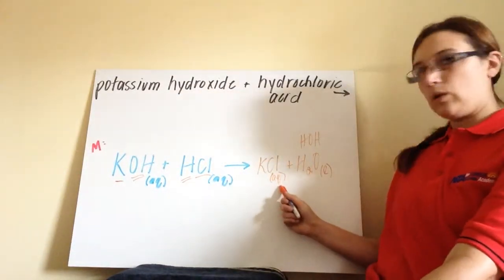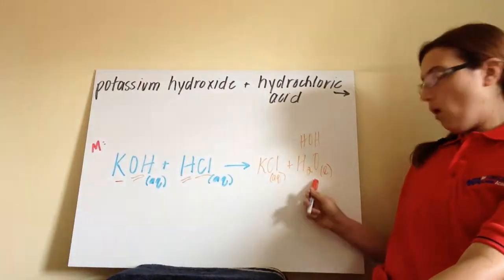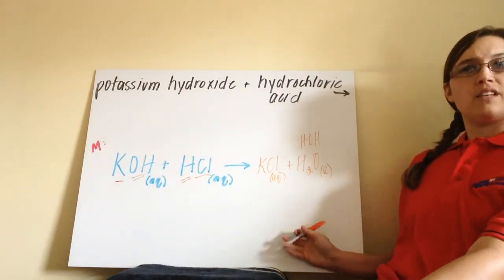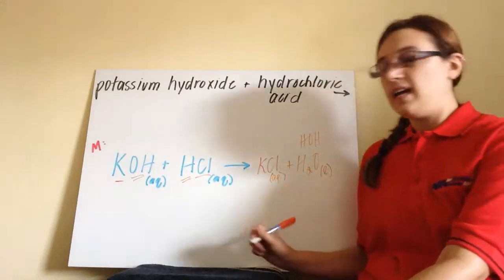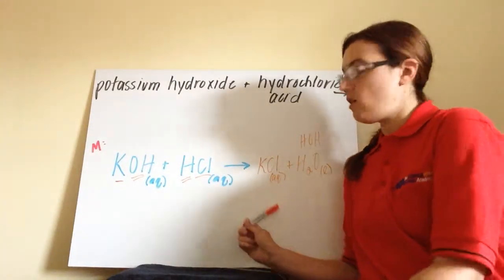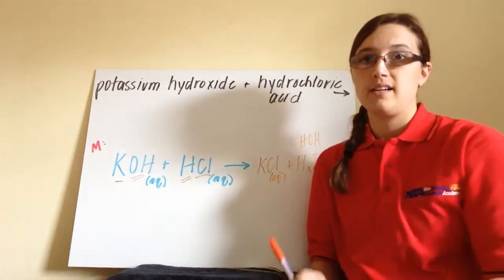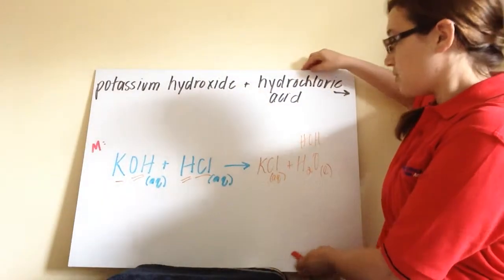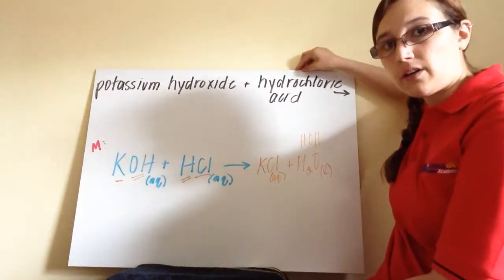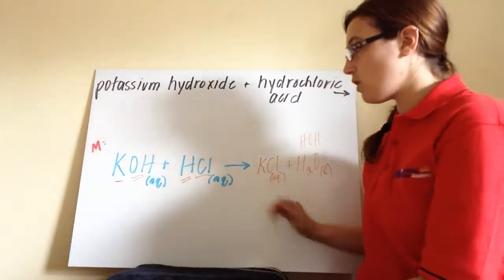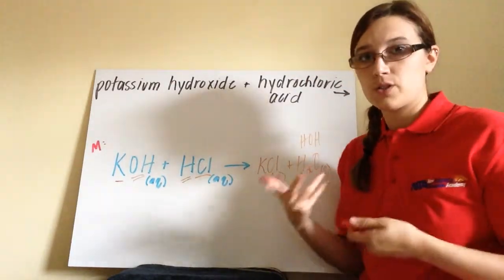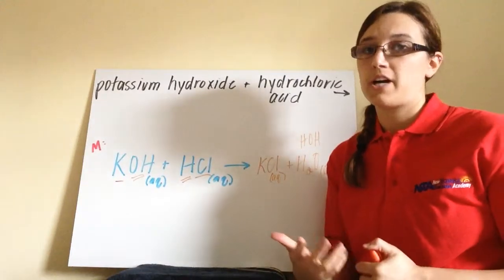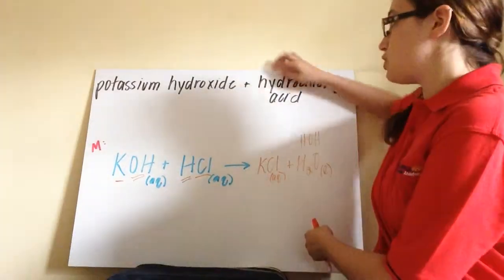So we have potassium chloride, we have water, and we have the states of matter. Now, what we can look at is breaking down all of these strong electrolytes into their ions. So this is our molecular equation. This gives the overall stoichiometry. You can make sure that it's balanced. This gives the overall stoichiometry of this reaction, but it doesn't necessarily show us what's happening in solution.